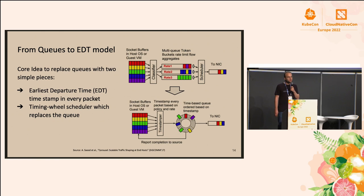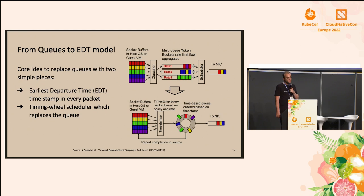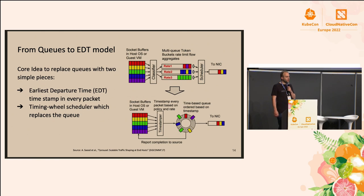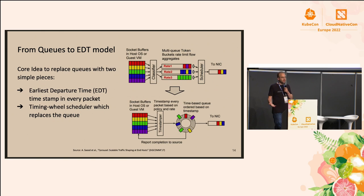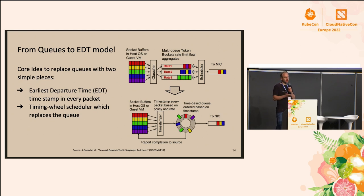There has been some interesting research from Google — they asked whether we can get rid of queues entirely. They came up with a really cool idea called the Earliest Departure Time model. The idea is to replace queuing fully with two simple core pieces: first, an earliest departure time — a timestamp on the network packet that dictates the earliest time the packet can be delivered to the network; and second, a timing wheel scheduler which holds that constraint and sends packets out.